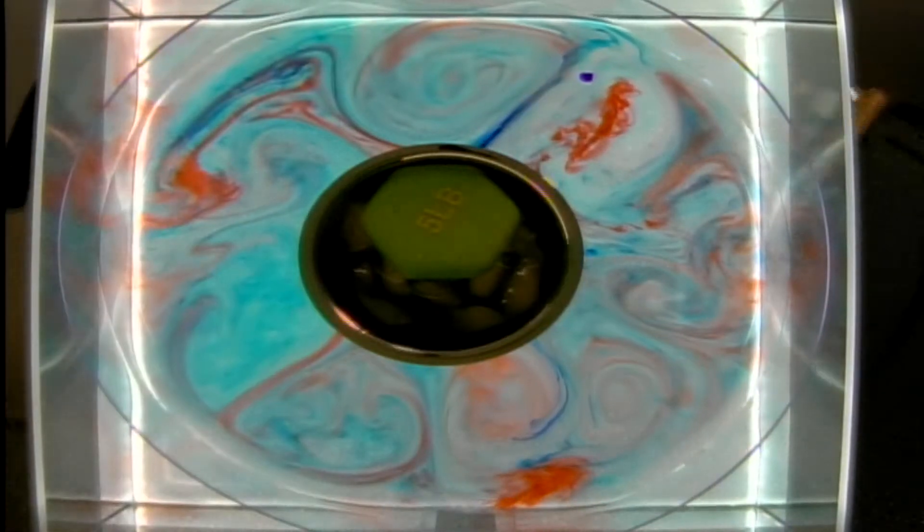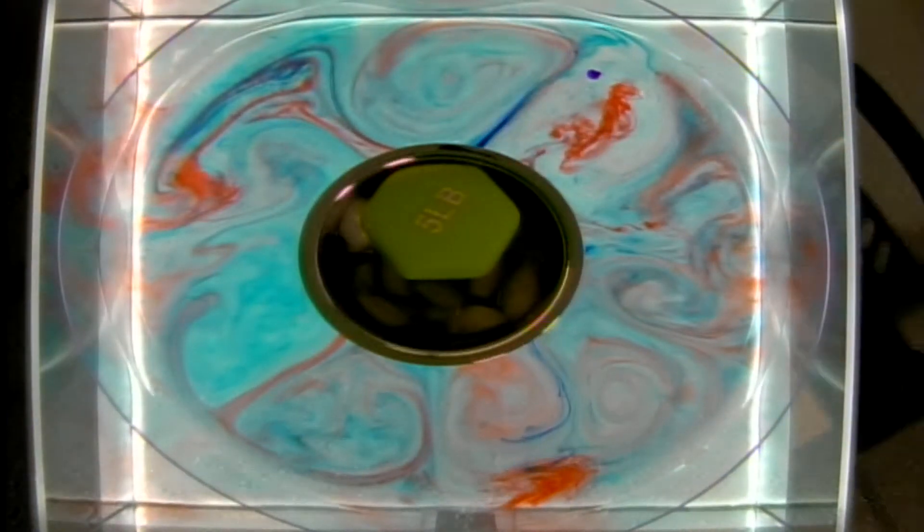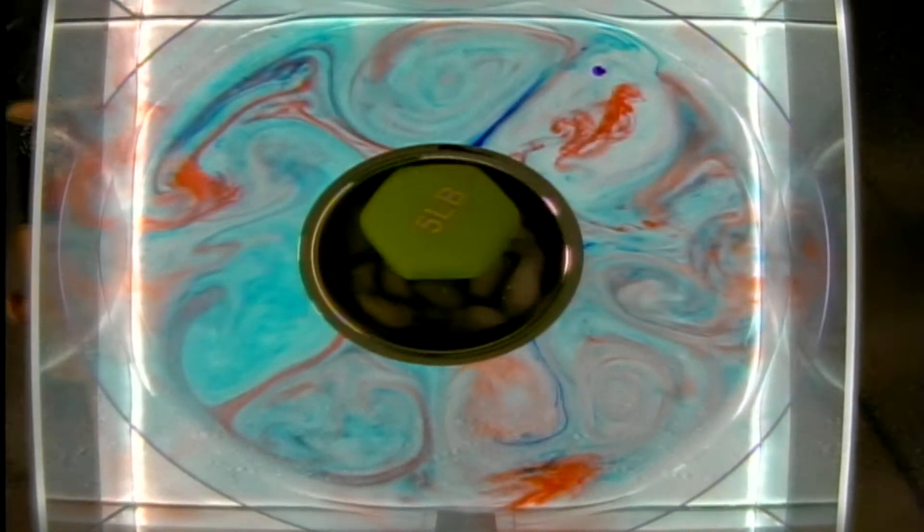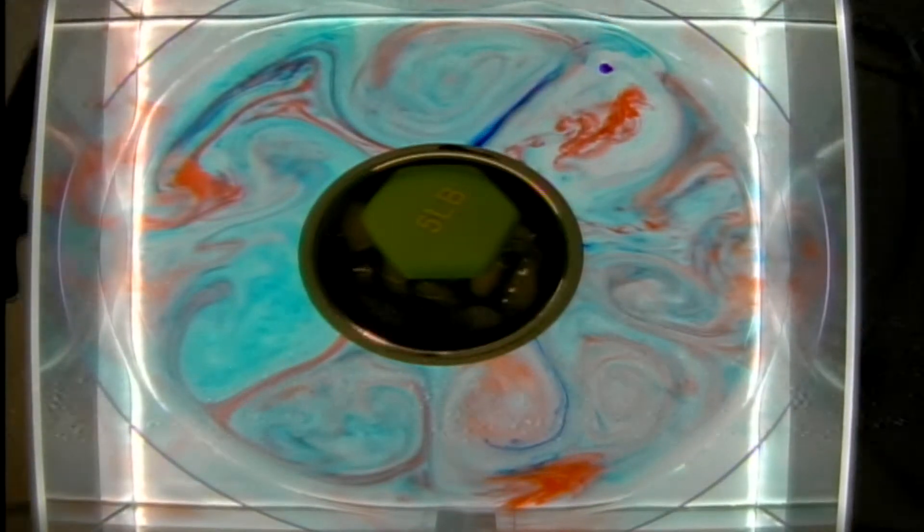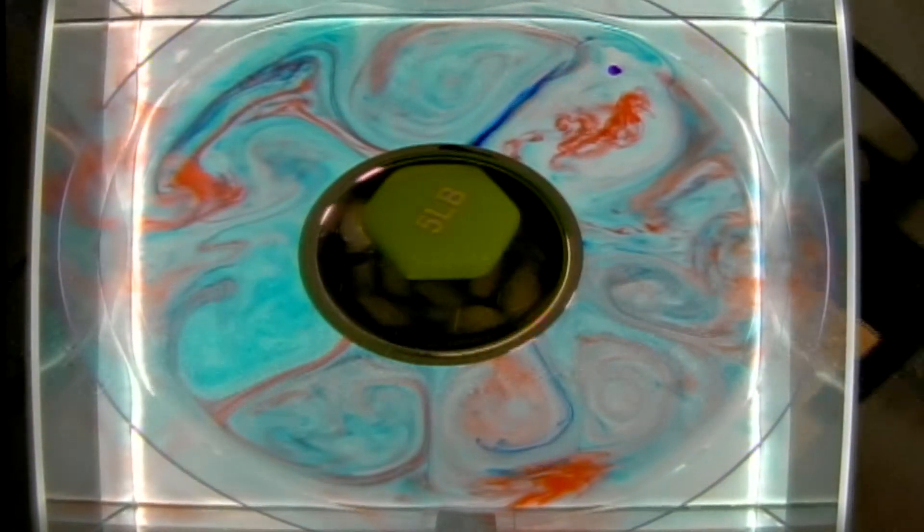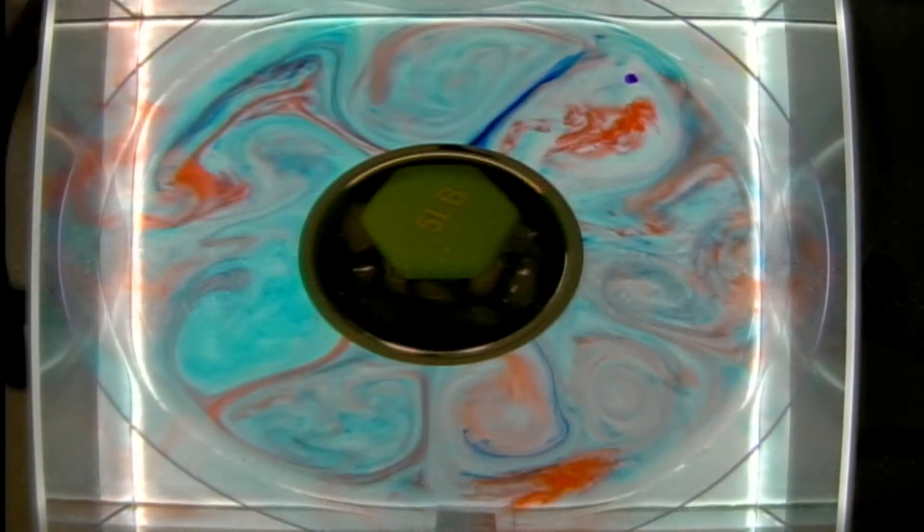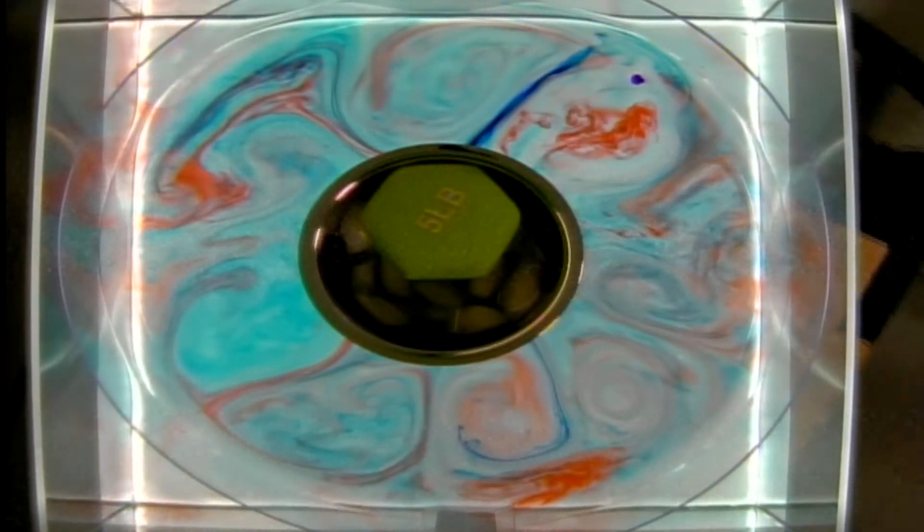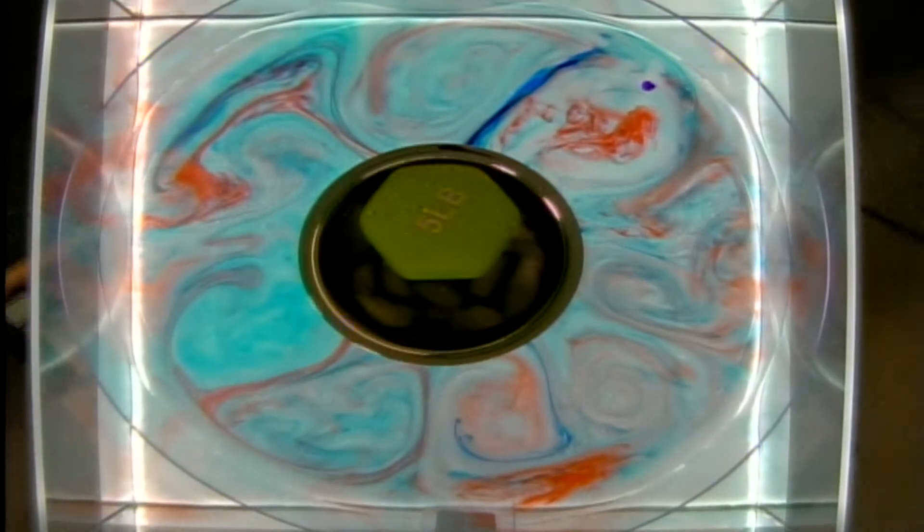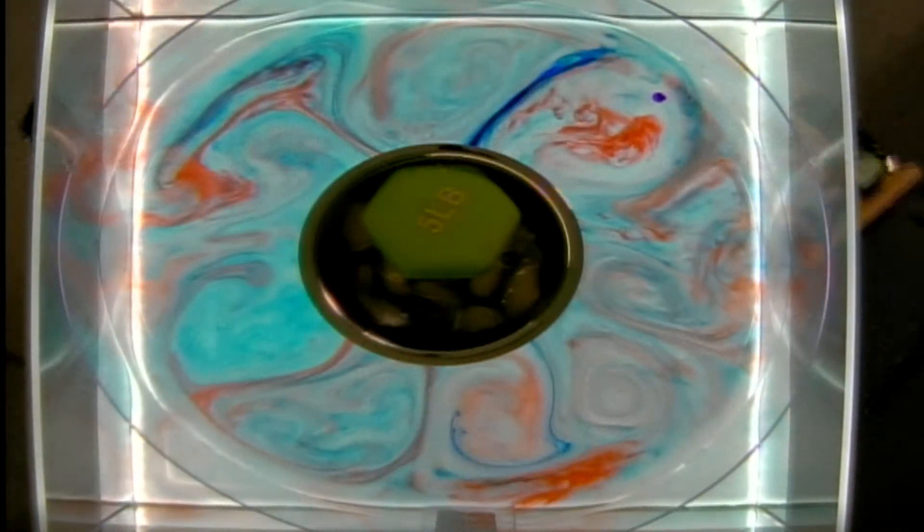The evolution that we've seen in this experiment is called baroclinic instability. These spiraling eddies that are transporting heat are generated by a baroclinic instability that exists because the tank and the Earth are rotating and there is a temperature gradient.